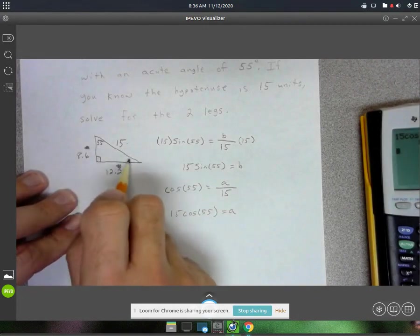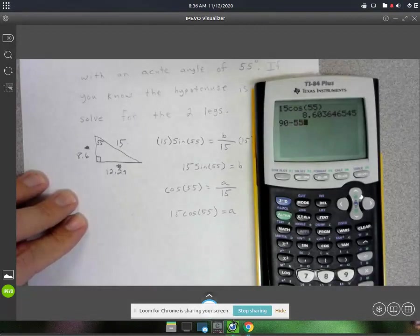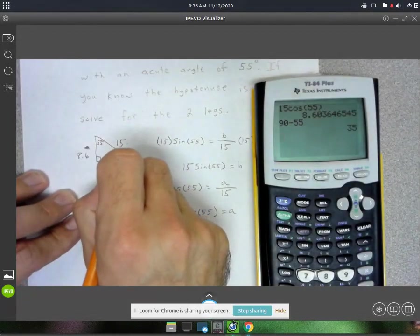Or you could have solved for this little angle over here pretty quick. That's just 90 minus 55, so this would be a 35 degree angle.